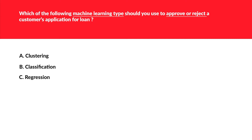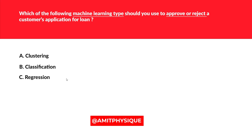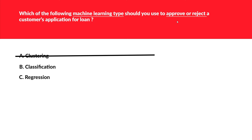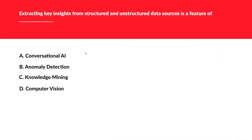Whenever you see grouping into something like yes or no, you should choose only one option. Since the question involves approve or request, clustering is wrong — it's not related to traits or patterns. Classification is definitely correct because grouping into yes/no or categories is classification. Regression is wrong because you are not predicting anything. So classification is the correct option.